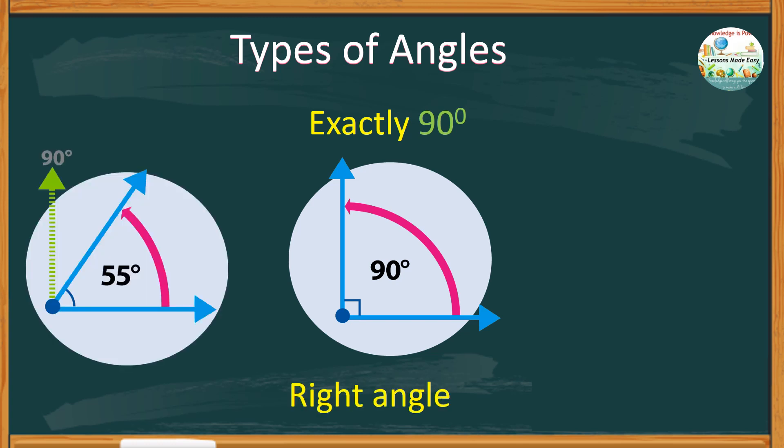Check out this other angle. If one side of a right angle bends inwards, making the corner less than 90 degrees, we call this an acute angle.